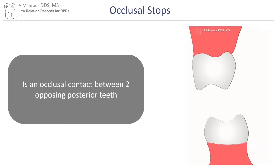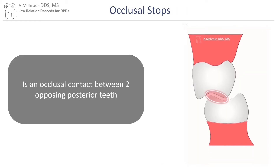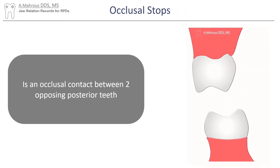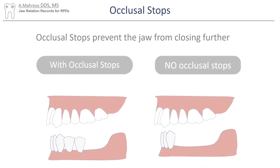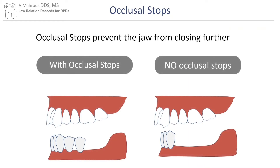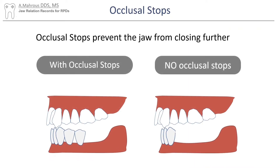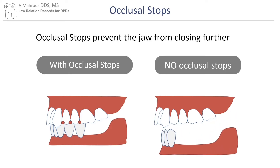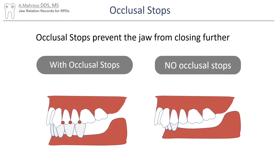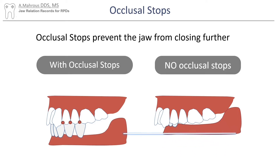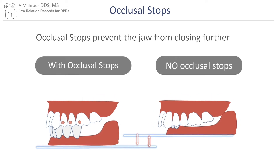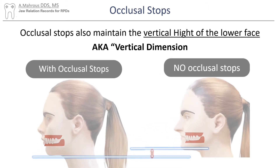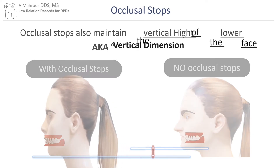An occlusal stop is an occlusal contact between two opposing posterior teeth. Occlusal stops are important because they prevent the closure of the jaws indefinitely. As seen here on the left, the patient with occlusal stops is able to stop closing their jaws, while the patient on the right with no occlusal stops continues closing until the anterior teeth touch the gingiva. That also causes a change in the vertical dimension, or what we call the vertical height of the lower face.